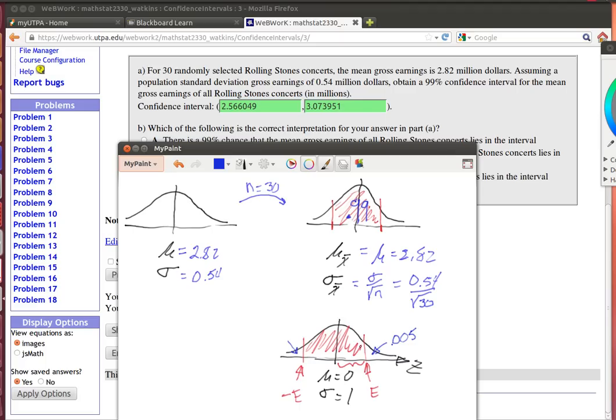That means that this area to the left of that, all the way back here, that whole area, is going to be 0.995.